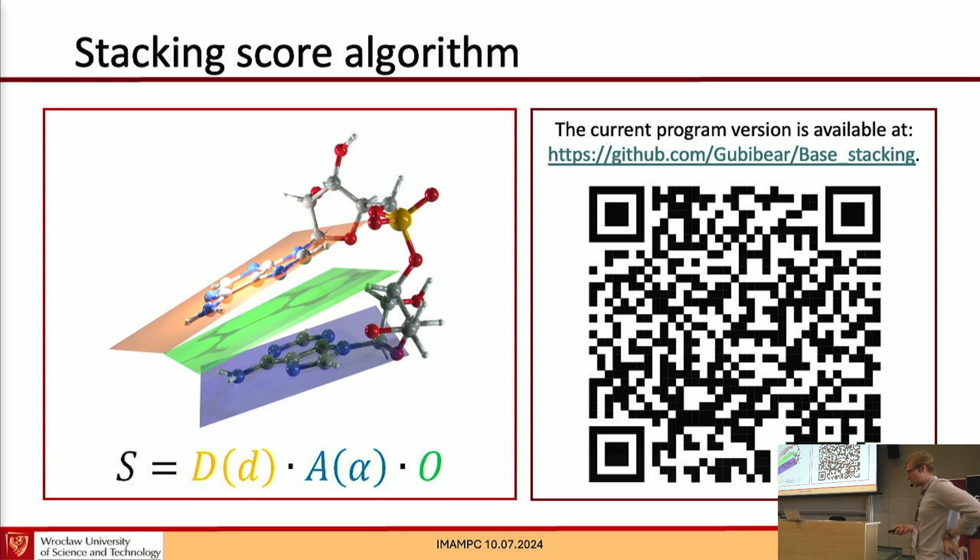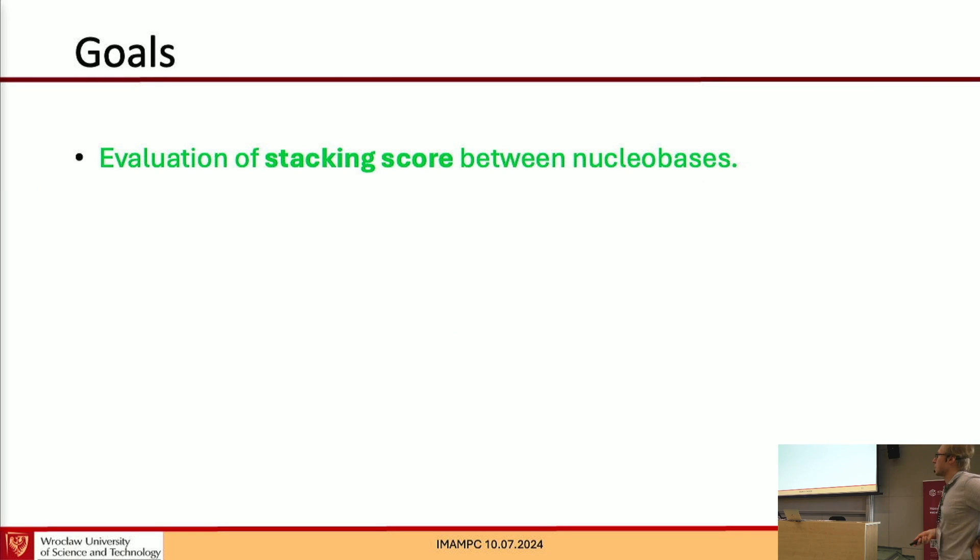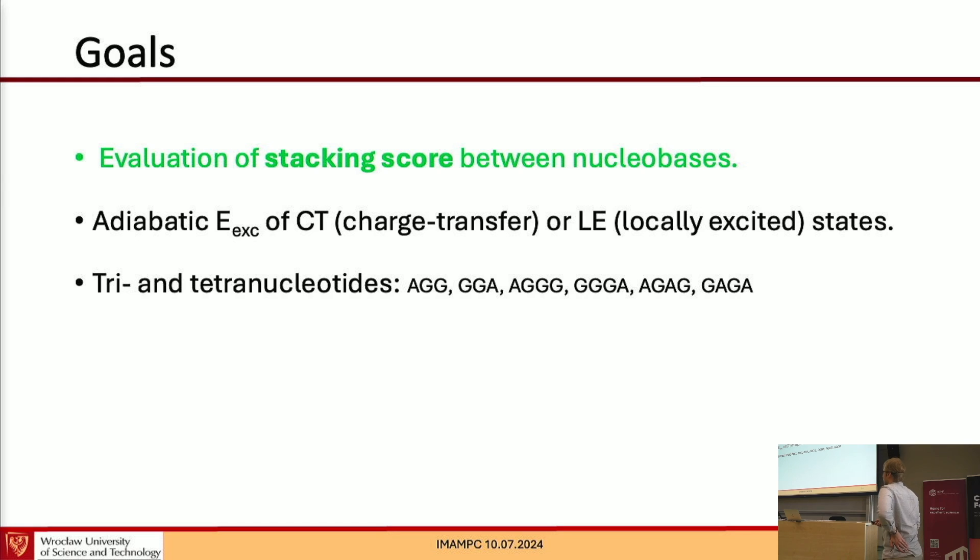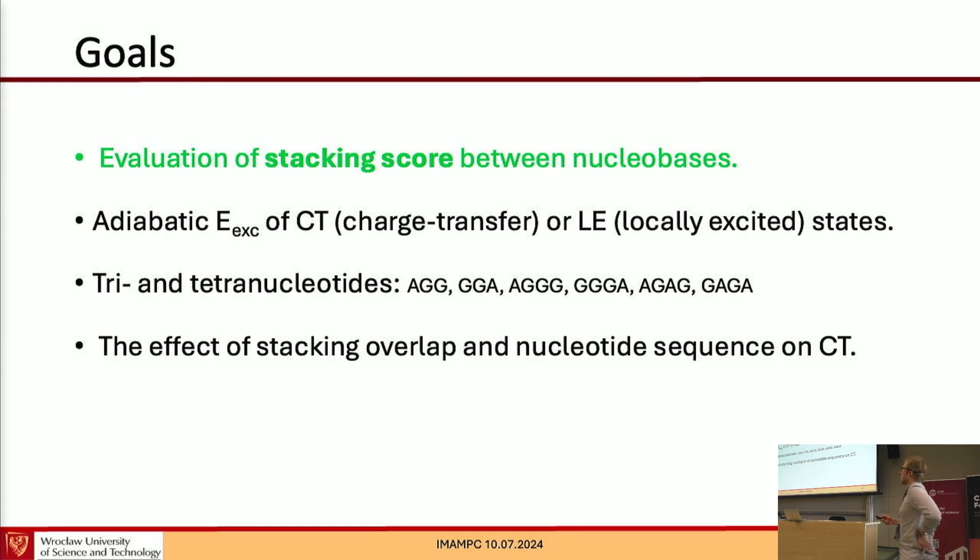The algorithm is available via Python code on my GitHub repository. If someone is interested, here's a QR code. So with this first goal of my study achieved, now is the time to test how our algorithm works on some systems. And in order to do so, I wanted to calculate excitation energy for charge transfer and locally excited states for different trimers and tetranucleotides and see how this stacking score would affect the energy of charge transfer state.